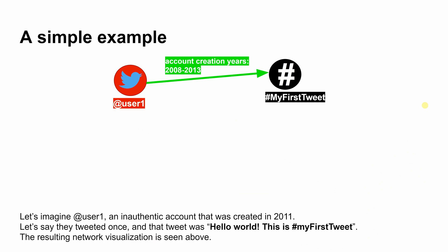A simple example. Let's imagine user1, an inauthentic account that was created in 2011. Let's say they tweeted once, and that tweet was: "hello world, this is my first tweet." The resulting network visualization is seen above.